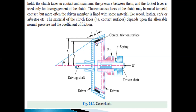A fork lever is used for disengagement of the clutch. The contact surface of the clutch may be metal to metal, but more often the driven member is lined with friction material such as wood, leather, cork, or asbestos.